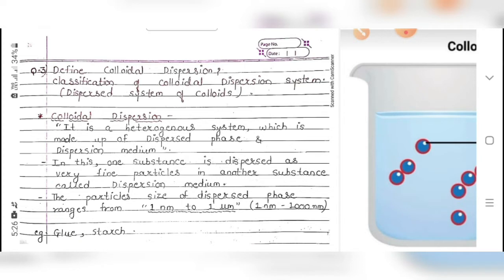In this system, one substance is dispersed as very fine particles in another substance called the colloidal dispersion medium. The particle size of the dispersed phase ranges from 1 nanometer to 1 micron (micrometer). One micrometer equals 1000 nanometers. Examples of colloidal dispersion are glue and starch.